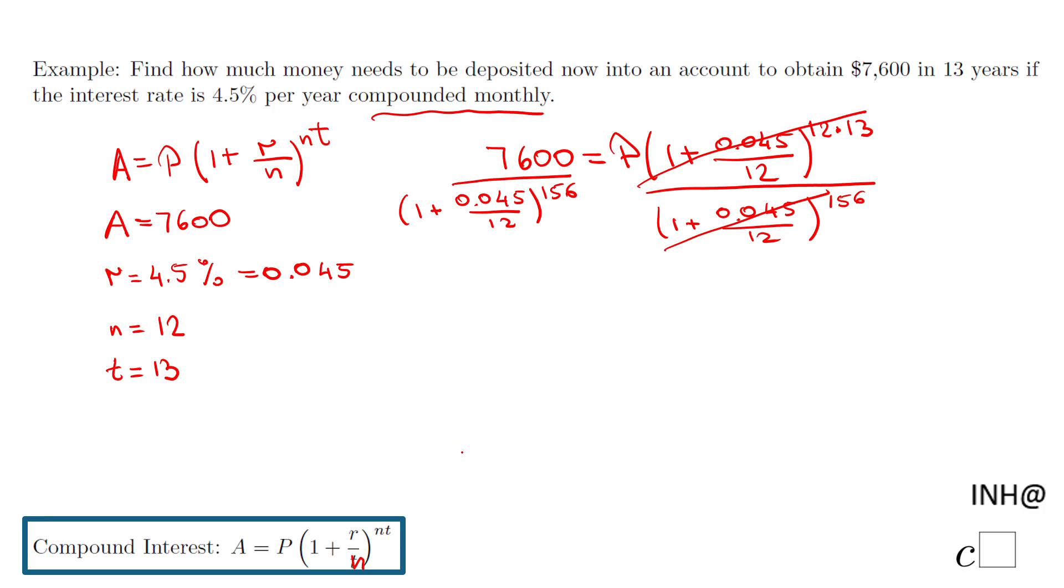So now it's about taking a calculator and do that division. Be careful what kind of calculator you have. I have a TI-30 XX MultiView, so I'm going to try to put it like that: 7600 divided by, I'm going to open a parenthesis, 1 plus 0.045 divided by 12, close the parenthesis.